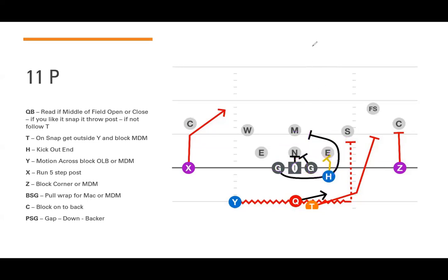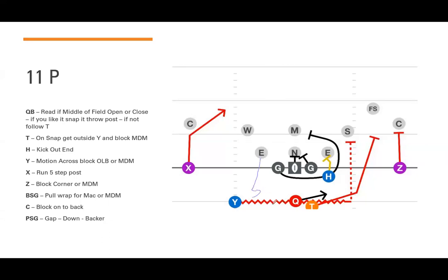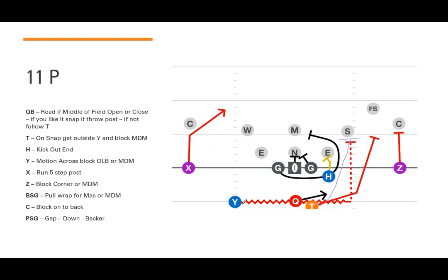If you want to run this with the running back, you can. The quarterback still has his pre-snap RPO read, but place the running back on the opposite side. The QB and RB mesh, and the quarterback reads the backside end — if the end crashes and chases the running back, the quarterback keeps and runs; if the end contains, the quarterback hands off to the running back for the buck sweep. You could also run a jet sweep version, though the backside guard may not pull fast enough for the jet player.